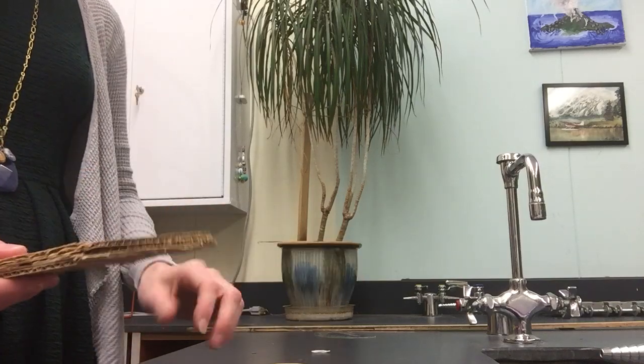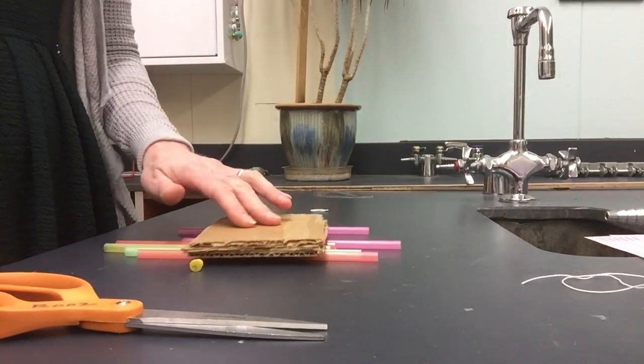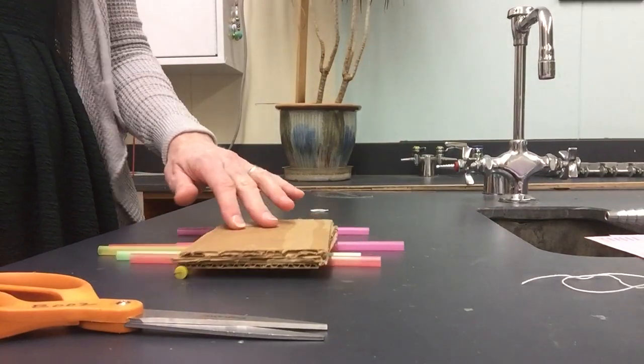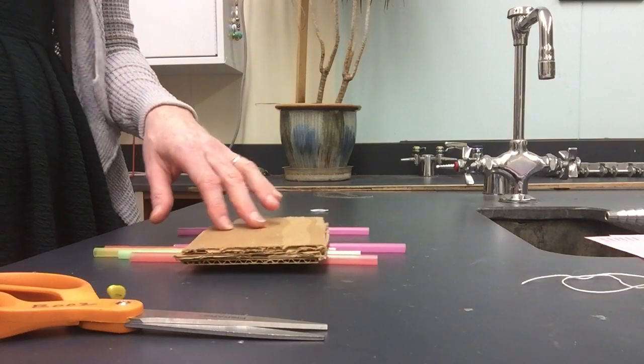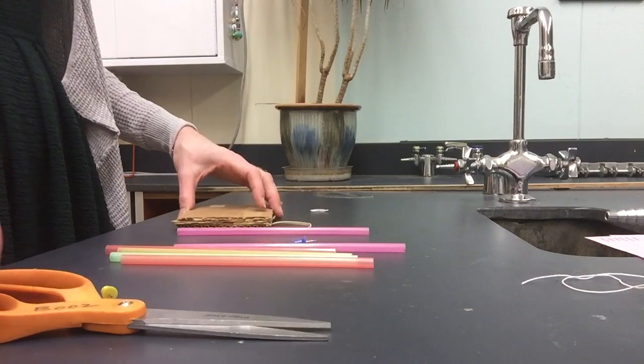In order to get this set up, the idea here is that the catapult is going to be your cardboard and it's going to be on the straws, which will help it roll and move easier. What you're going to be launching is the marble.